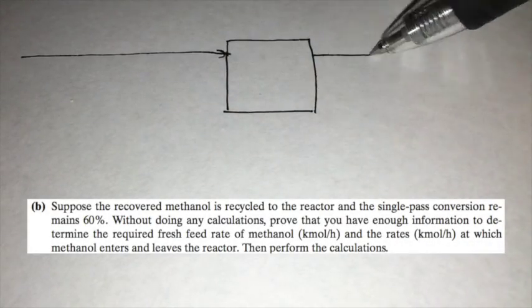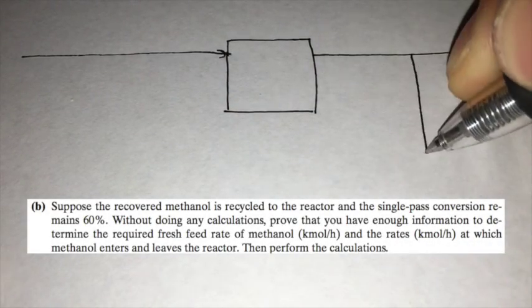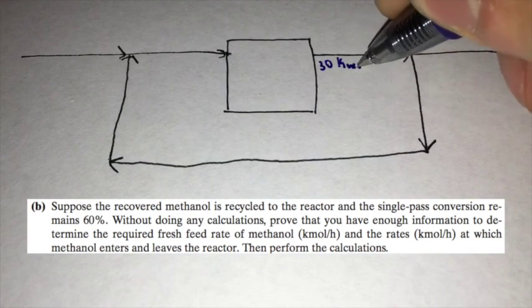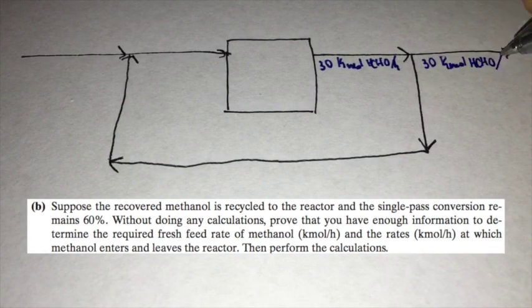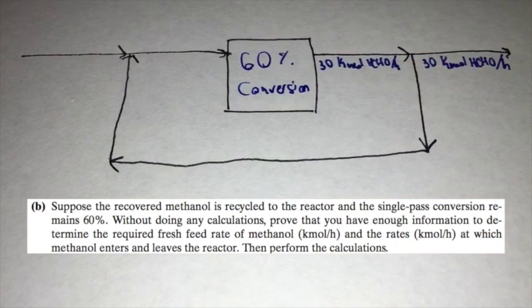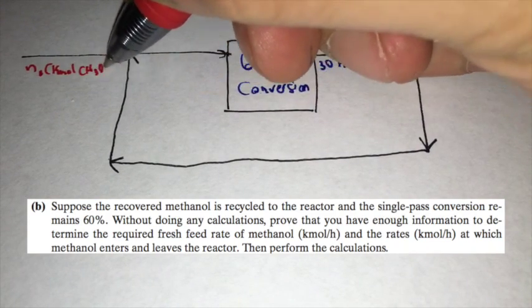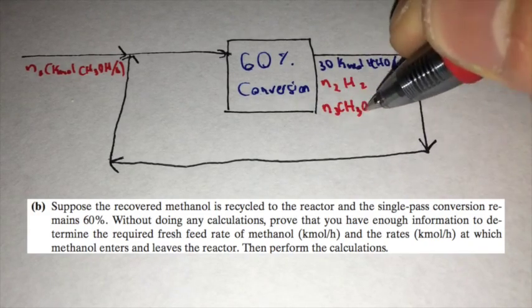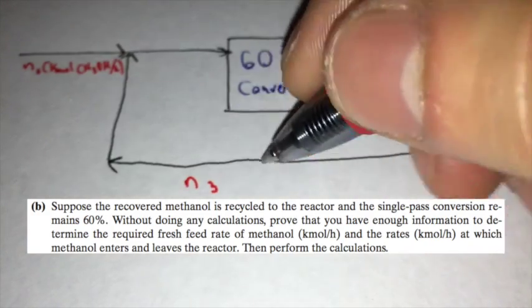Suppose the recovered methanol is recycled to the reactor and the single pass conversion remains 60%. Without doing any calculations, prove that you have enough information to determine the required fresh feed rate of methanol and the rates at which methanol enters and leaves the reactor. Then perform the calculations.